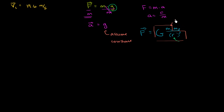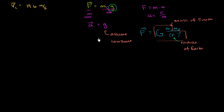Little g combines all those terms — big G, the mass of the Earth, and r, which is really the radius of the Earth from the surface to the center. So you'd be correct that the force of gravity changes a little bit, but for the sake of throwing things up in our atmosphere, we can assume it is constant. If you were to calculate it, it is 9.8 meters per second squared, rounded to the nearest tenth.